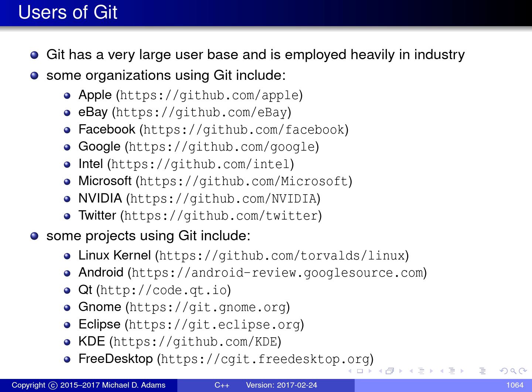Git is quite popular. It has a very large user base and is used heavily in industry as well as for many open source projects. Some of the organizations employing Git include many major technology companies such as Apple, Google, and Microsoft. Open source projects employing Git include the Linux kernel, Android, and Qt.